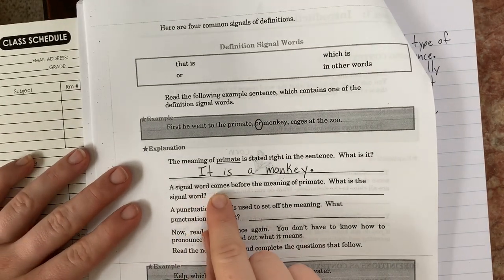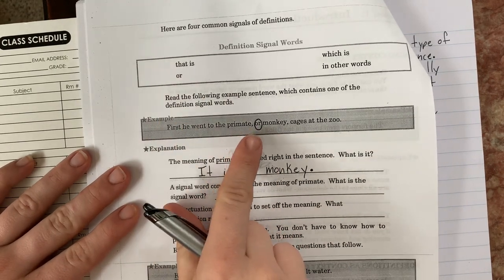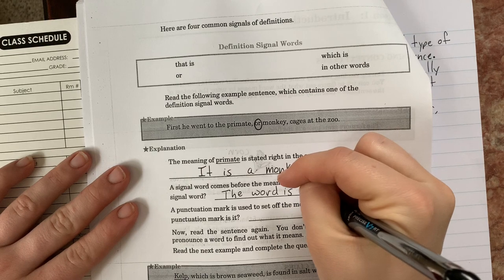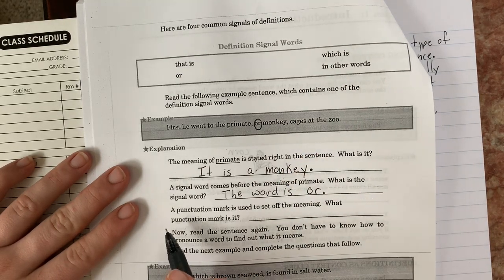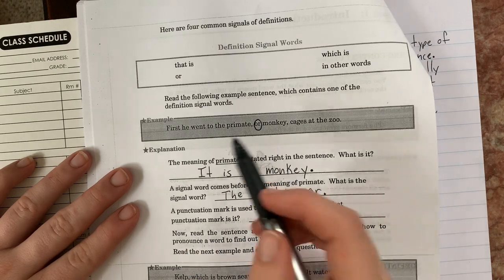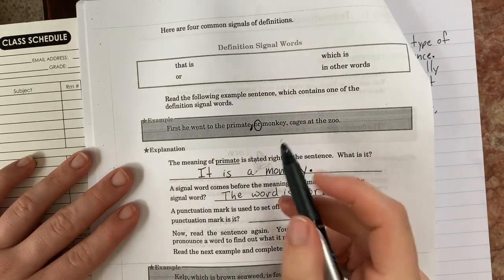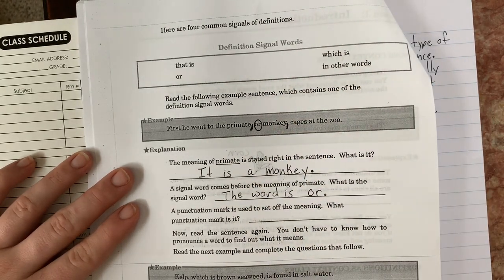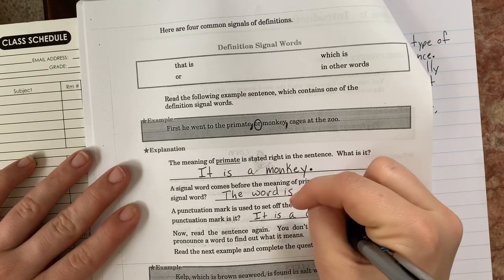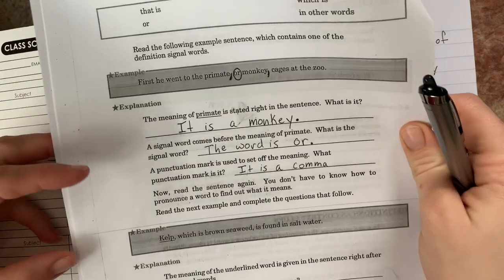A signal word comes before the meaning of primate. What is the signal word? Well, I circled it. When I heard it, I circled it. So the word is or, period. A punctuation mark is used to set off the meaning. What punctuation mark is it? Now let's look again. First, he went to the primate, comma, there is a comma there, comma, or monkey, comma, cages at the zoo. It is a comma. And we wrote that down in our definition too, right? Often next to commas. It always has commas nearby.